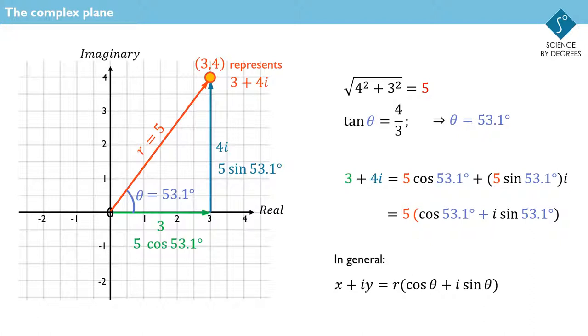A complex number can be expressed in Cartesian coordinates on the complex plane, or in polar coordinates in terms of its magnitude and the angle it makes with the real axis. You're going to see later that expressing complex numbers in polar form is incredibly useful in science.